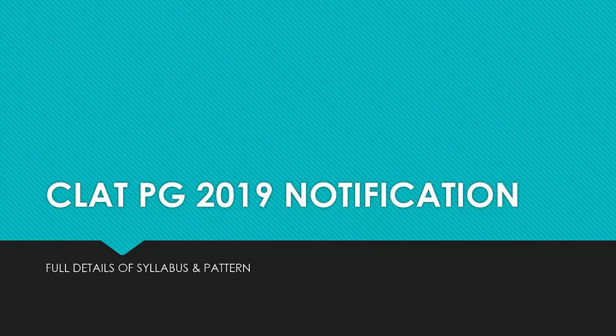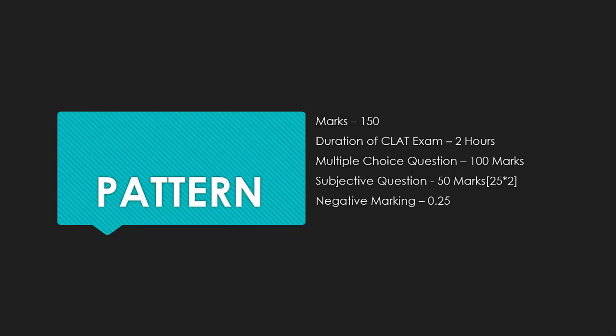Starting with the pattern — the marks are 150. As always, the CLAD PG exam consists of 150 marks and the duration is two hours. In the previous years, you only had to write the objective answers, so two hours was ample time. But this time you have to answer both the subjective and the objective parts. You have to manage your time carefully, because 100 marks is for the objective questions and 50 marks for the subjective questions.